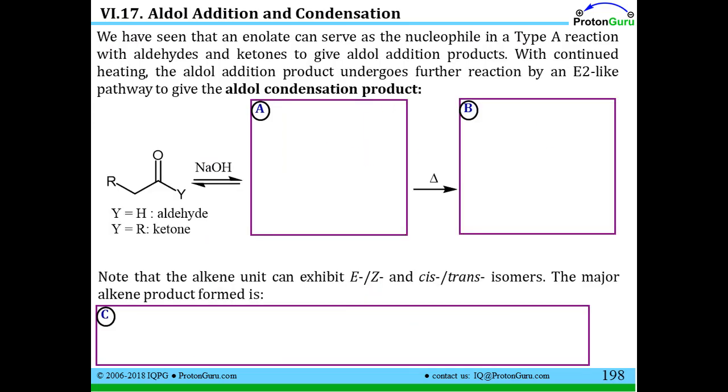At this point, we've seen that an enolate can serve as a nucleophile in a Type A reaction with aldehydes and ketones to give the aldol addition products. But with continued heating, any of these initially formed alcohols can lead to an E2-like pathway to give what is called the aldol condensation product. Let's say this is a hydrogen, so we have an aldehyde. We'll get one clean aldol addition product. Let's say we keep continuing to heat this reaction product. We still have an alpha proton here. If we think about taking that proton away with the base and this negatively charged carbon, we can think about pushing this OH group off. This would lead to the formation of a double bond in this position between the alpha carbon and what used to be the carbonyl carbon, giving us the product in box B.